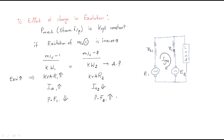So whenever two machines are operated in parallel, when excitation varies, the active powers remain constant. However, when reactive power varies, the armature current changes and the power factor changes accordingly.